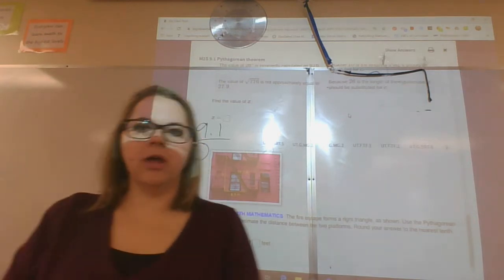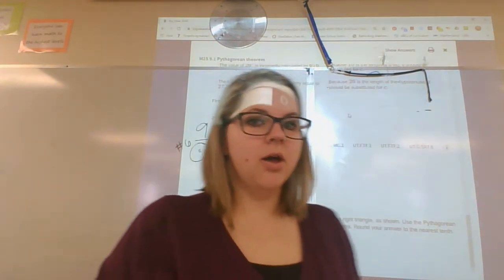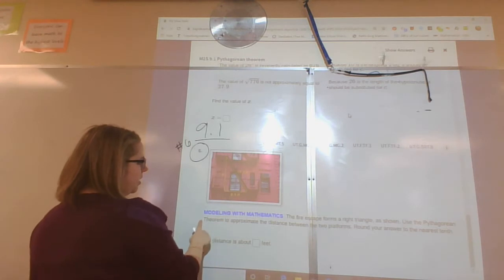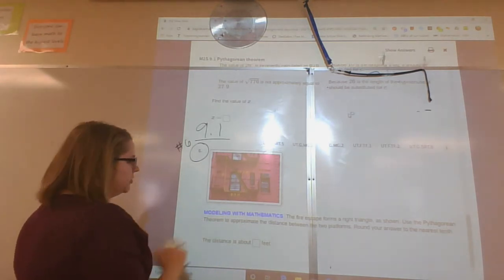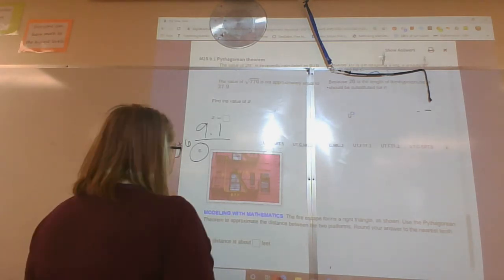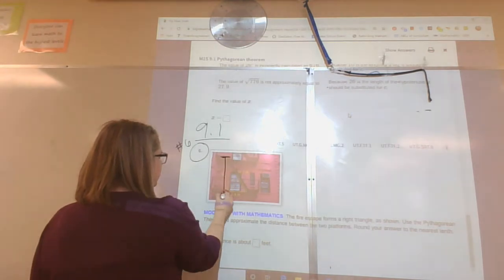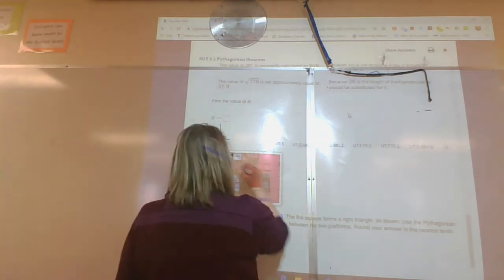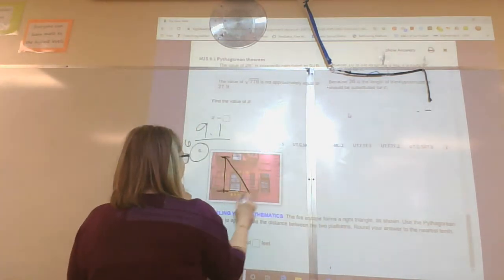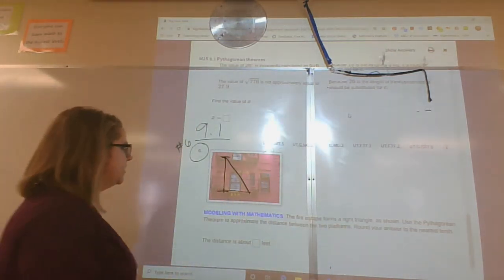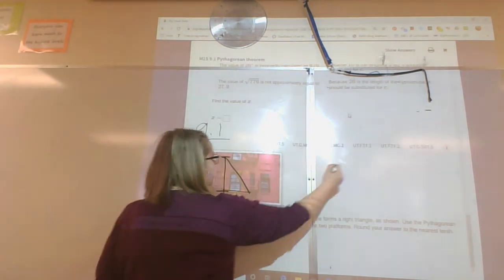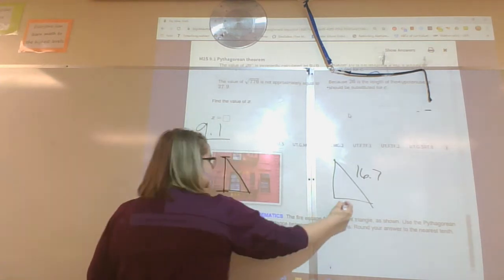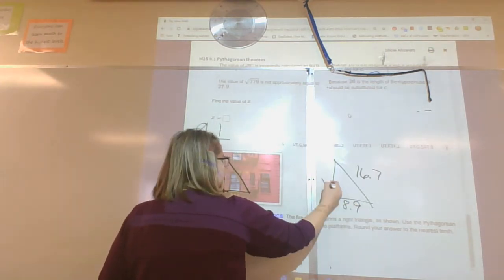Okay, this is one I think I saw the most people struggle with. So all it's asking is, here's a triangle here. I want to use the Pythagorean Theorem to approximate the distance. So my x value right here, I want to approximate that guy. I'm going to draw my triangle. And we want to find x. Now it says right here that on my triangle, this is 16.7 feet, this is 8.9 feet, and this is x.